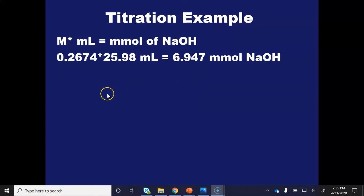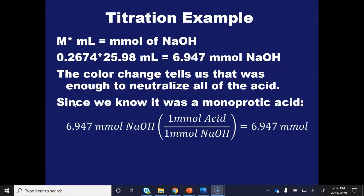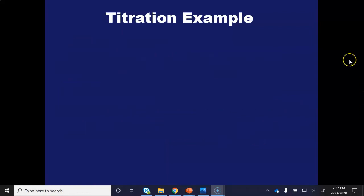Because I was at the end point, I know I added enough base to neutralize all of my monoprotic acid. I can tell that because my pH is now just a tiny bit over seven, and so the base is in a slight excess. I have a little bit of extra base. So since it's a monoprotic acid, I can say that there was one millimole of H plus acid needed for one millimole of sodium hydroxide, and I get 6.947 millimoles of acid.